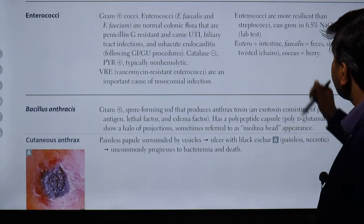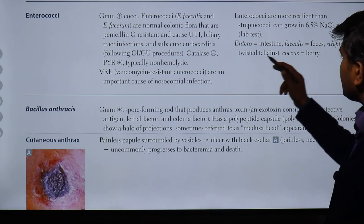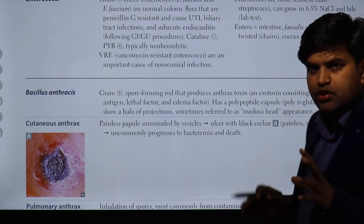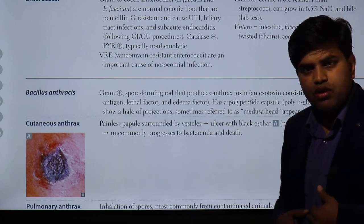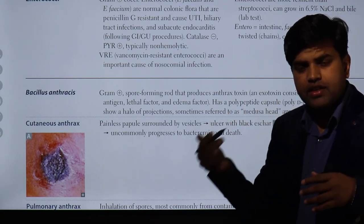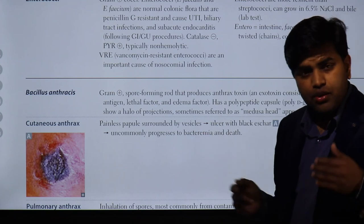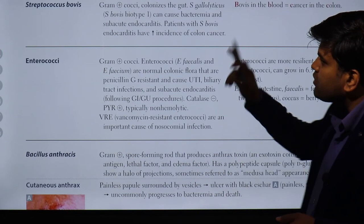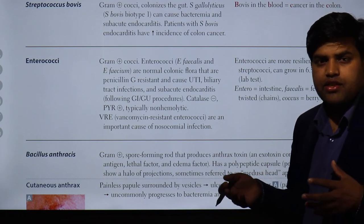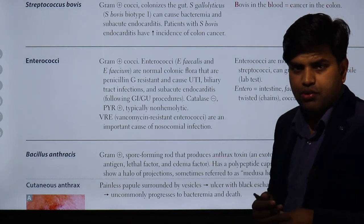So enterococci can grow in 6.5% NaCl and bile, which is why they cause biliary tract infections. Both enterococci and Streptococcus bovis are part of normal colonic flora that can cause disease. Enterococci typically cause infection following genitourinary or gastrointestinal procedures, and VRE causes nosocomial infections. For Streptococcus bovis, the exam scenario will describe a patient with colonic carcinoma symptoms who has developed infective endocarditis — you must identify the organism as Streptococcus bovis. Thank you.